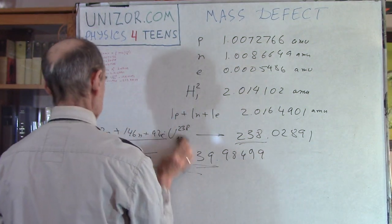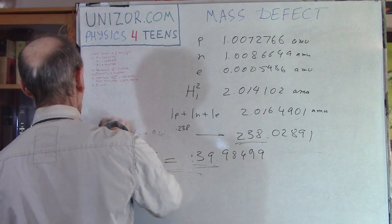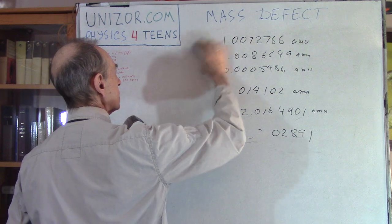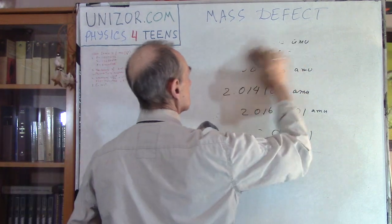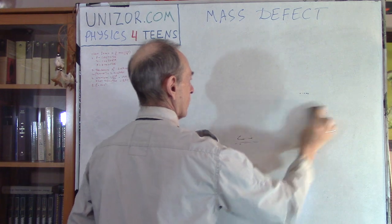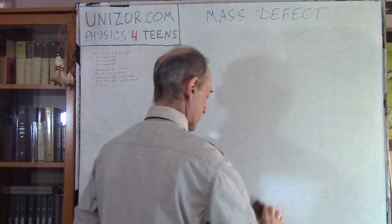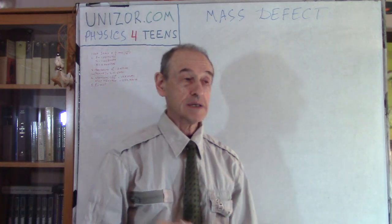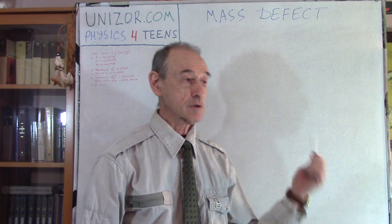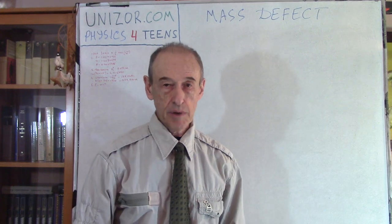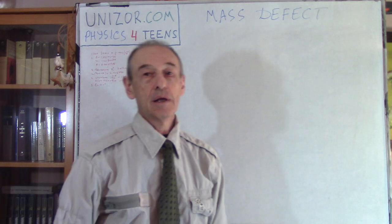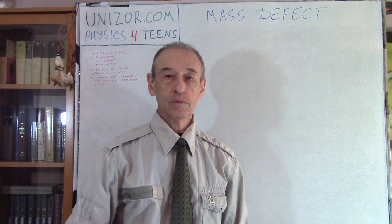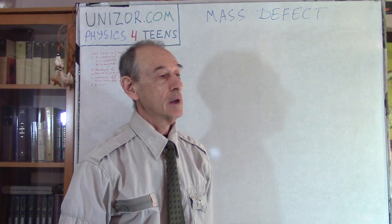So why? Where does the mass go to? Matter doesn't disappear. Matter can only be converted from one state into another. And something must actually be preserved, something like conservation. Conservation of energy, conservation of mass. We have many different conservations. So what's going on here? Why do we have such a discrepancy? Why do we have mass defect? The sum of components is greater than the whole which these components compose.